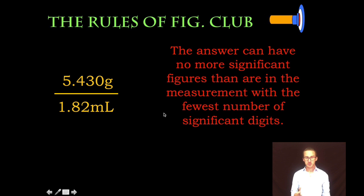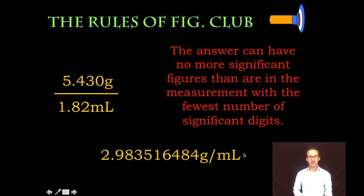As I take a look at this particular operation, a classic density calculation, mass divided by volume, I pop that sucker into my calculator. Wham, bam, thank you ma'am. I'm feeling really great about myself. 2.983516484 grams per milliliter.